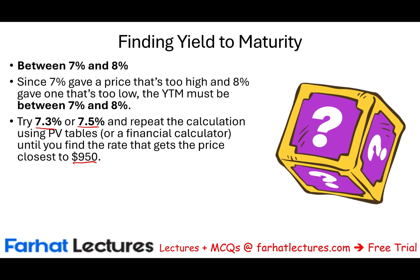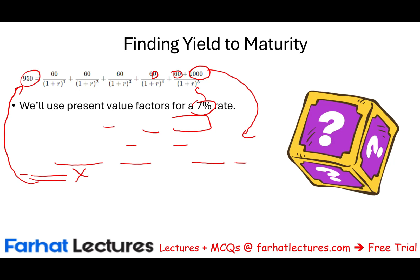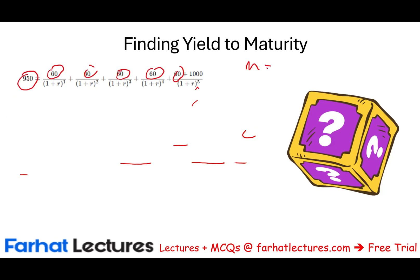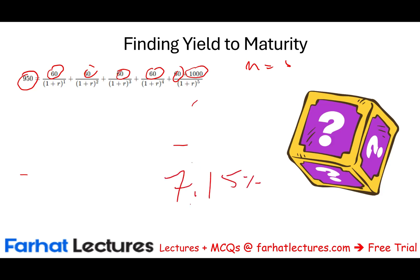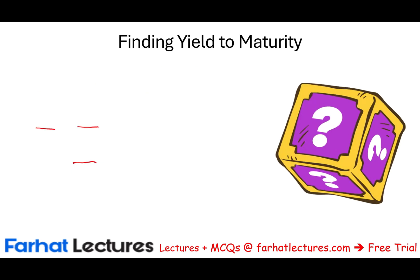What is the yield to maturity? When you bought this bond, you paid $950. You're getting five payments of $60 and you'll receive $1,000 one time, but you don't know what you're earning. If you hold this bond till the end, you would earn 7.15%. This is called yield to maturity, which is totally different from the current yield.